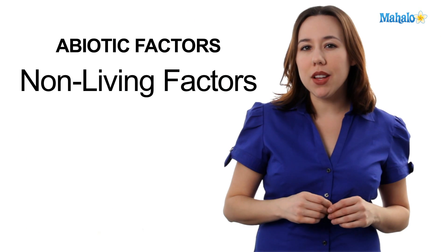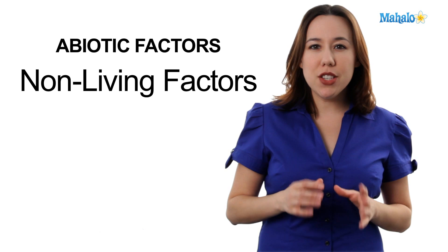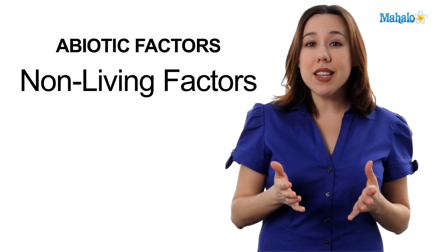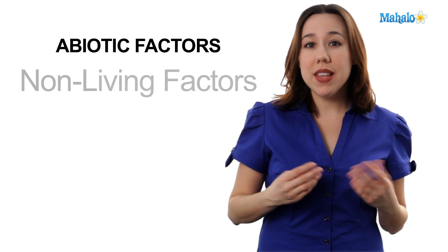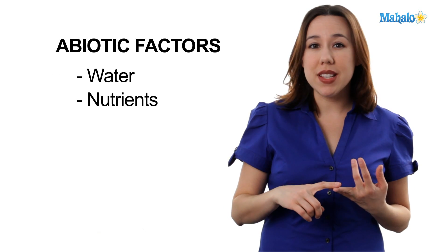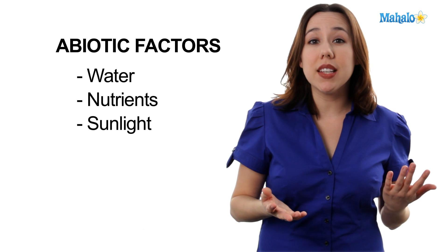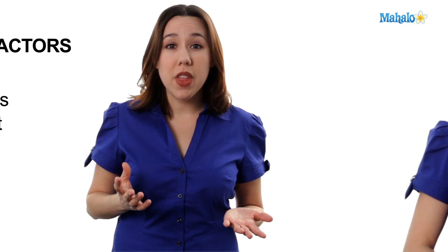Let's start with the abiotic, or non-living, factors. These are factors that, even though they are non-living, are essential for life to survive — things like water and nutrients like hydrogen, oxygen, nitrogen, and carbon, as well as availability of sunlight and soil to grow. All of these things influence the availability of nutrients and resources in an ecosystem, and this in turn affects how fast and how rapidly a population can grow.